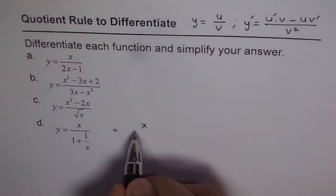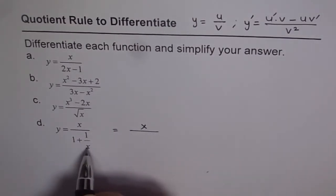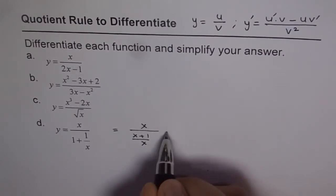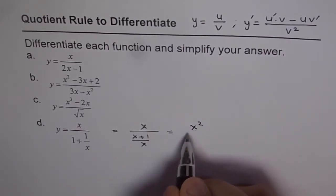you can write this as x over, now we can take x common denominator, so we get x plus 1 over x. Now this could be now written as x square over x plus 1.